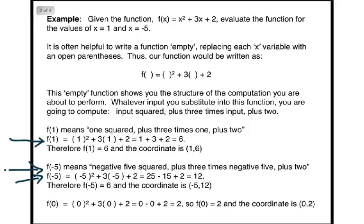Let's go ahead and find f(0). That means you plug in 0 for the input. So, 0² + 3(0) + 2, which is 0 + 0 + 2, and that equals 2. So f(0) = 2, and the coordinate is (0, 2). If you were to make a graph, our graph would have the coordinates (1, 6), (-5, 12), and (0, 2).